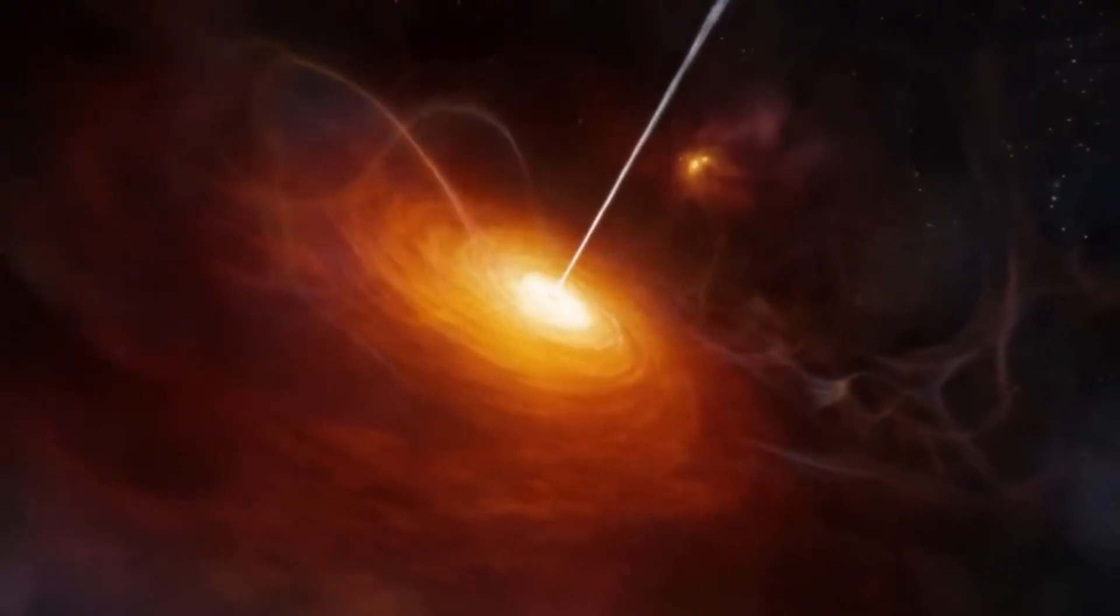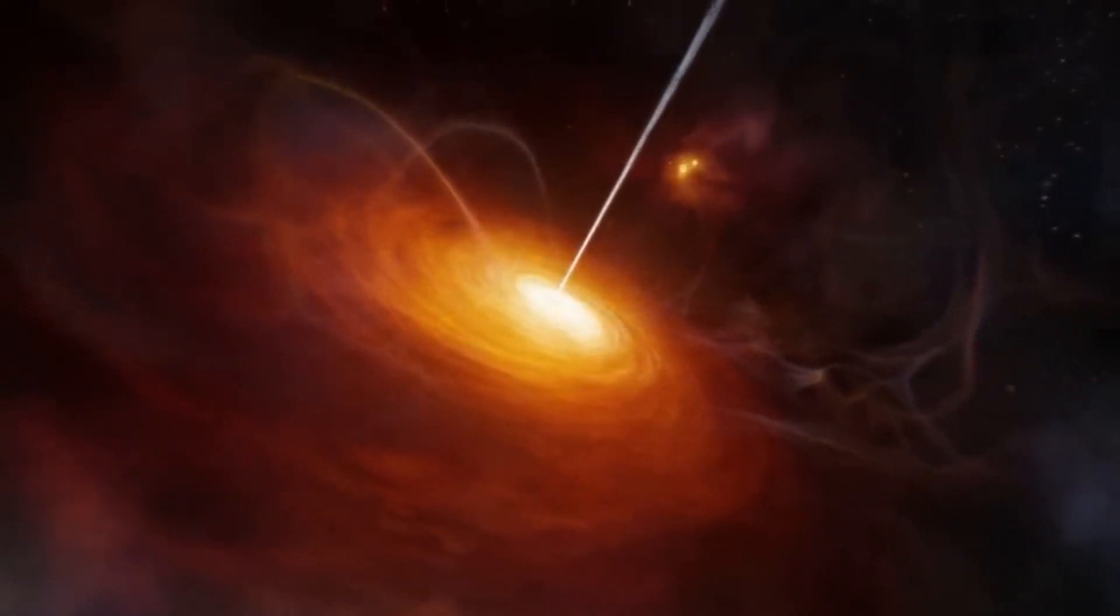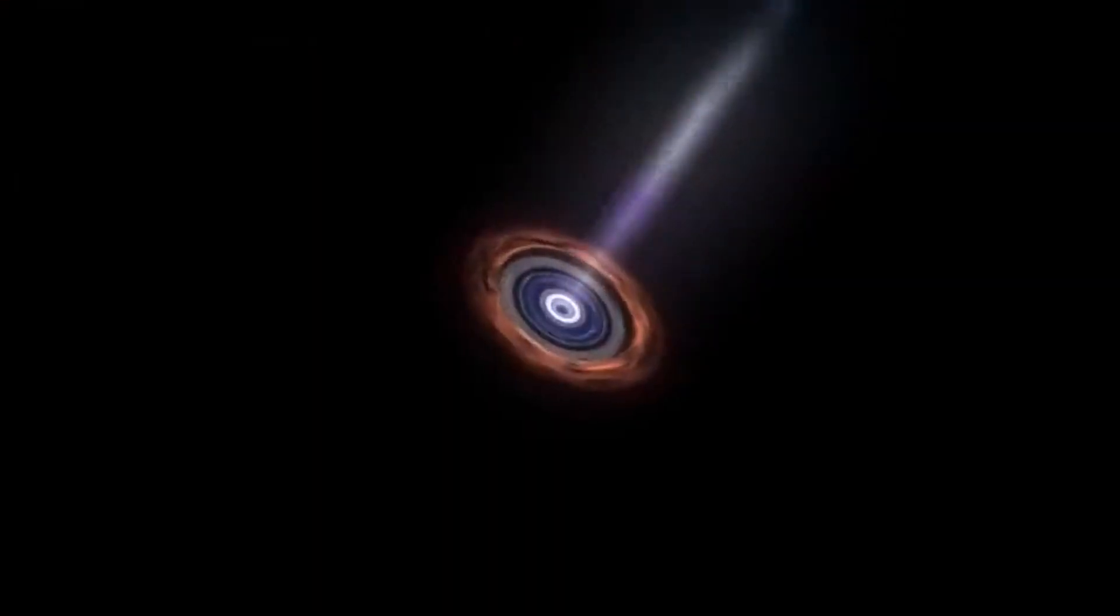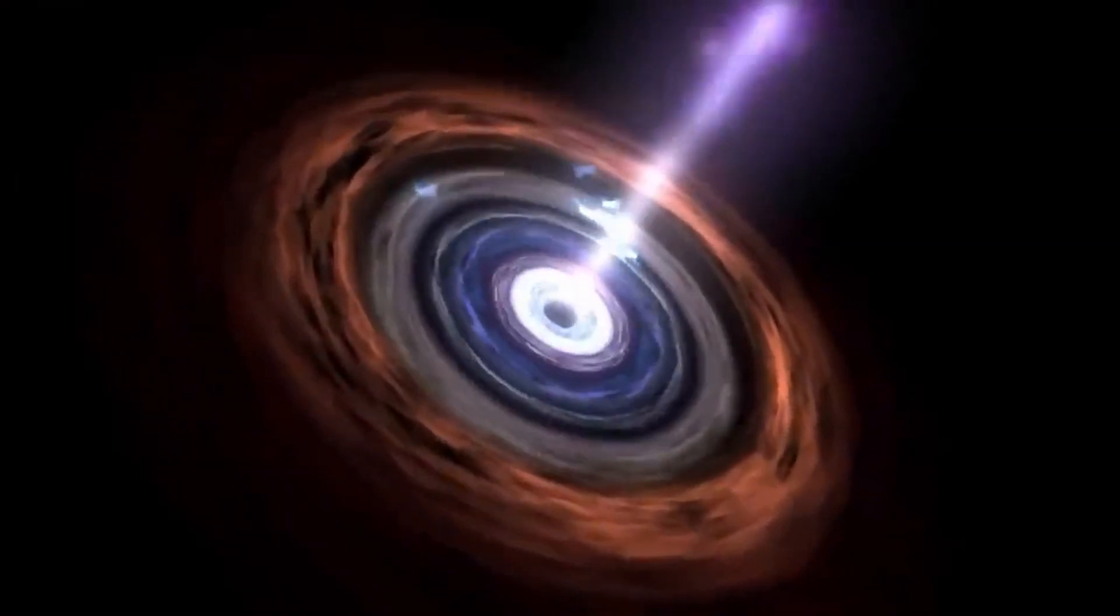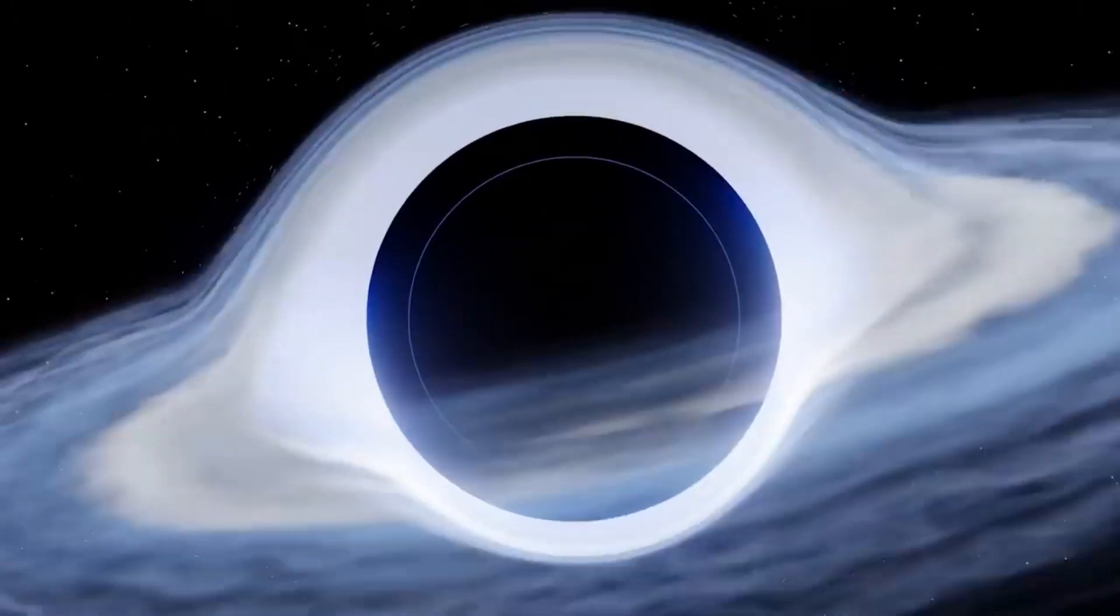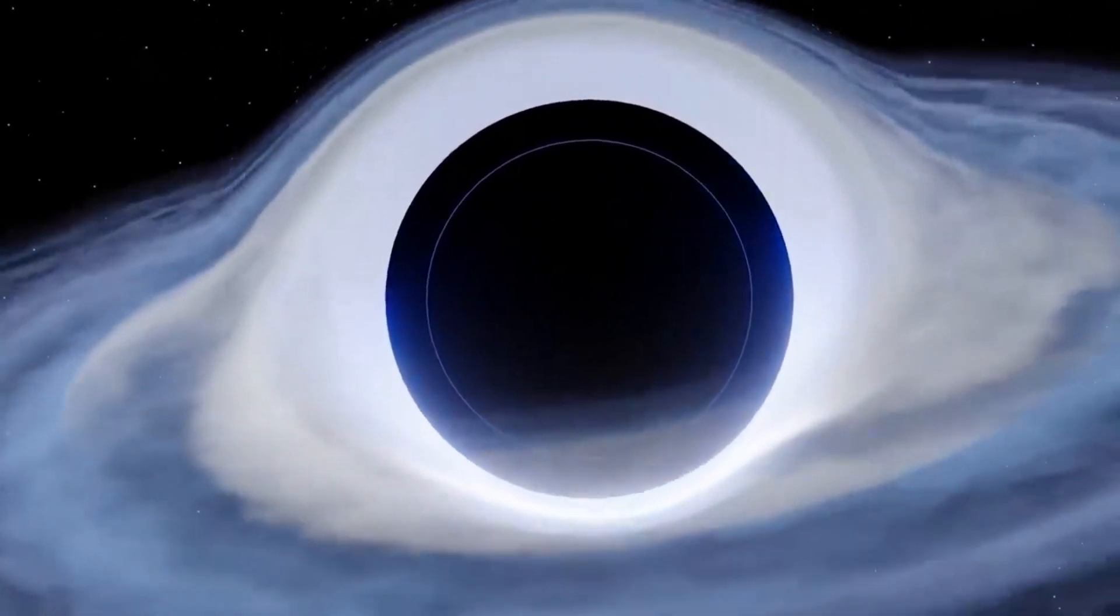According to a scientific report by Andrew King, for any active supermassive black hole in a stellar cluster or galactic nucleus, there seems to be a limit of around 50 billion solar masses. Beyond that limit, the growth rate slows down.